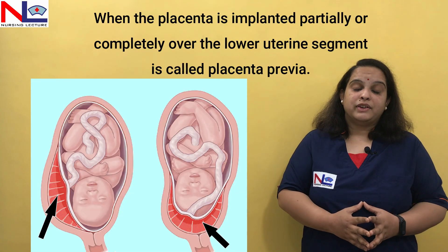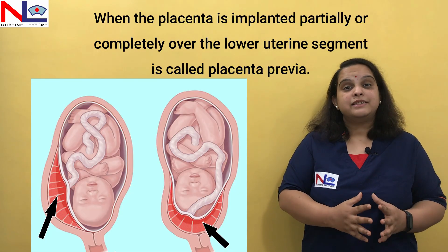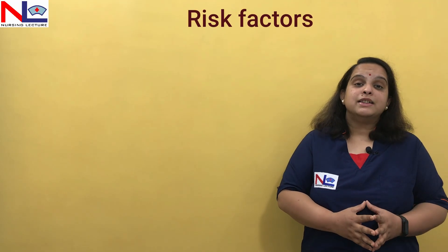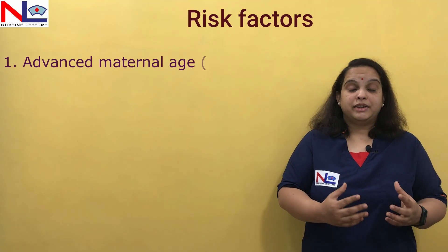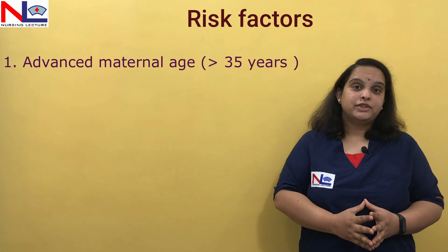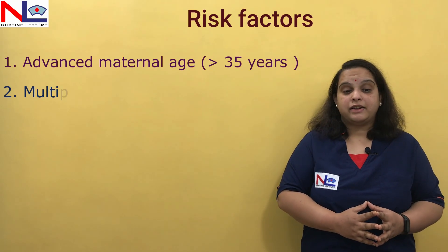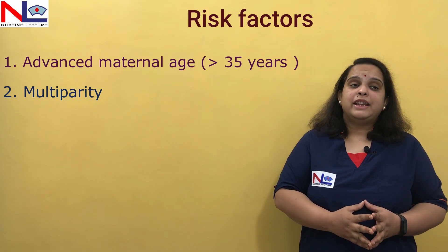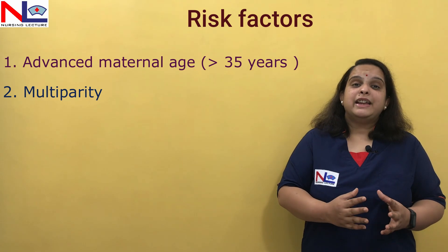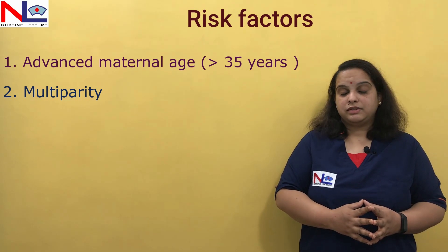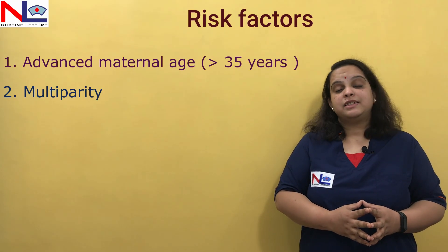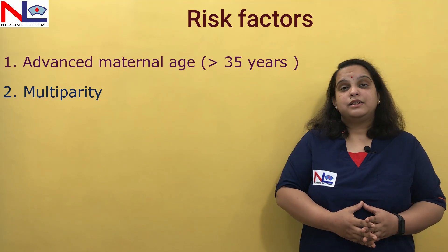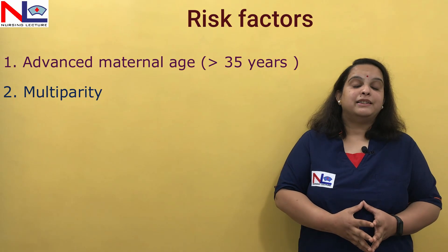There is no exact cause for placenta previa, but there are some risk factors that aggravate this condition. If the mother is of advancing age or is pregnant for the first time at a late age, or if there is multiparity — having given birth to two or more babies — there is an aging process of the uterine vessels, making the upper segment unable to implant the placenta, so it gets implanted in the lower segment.